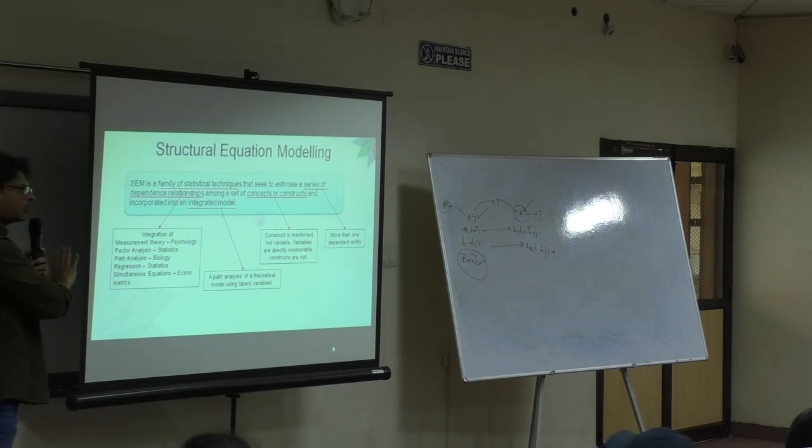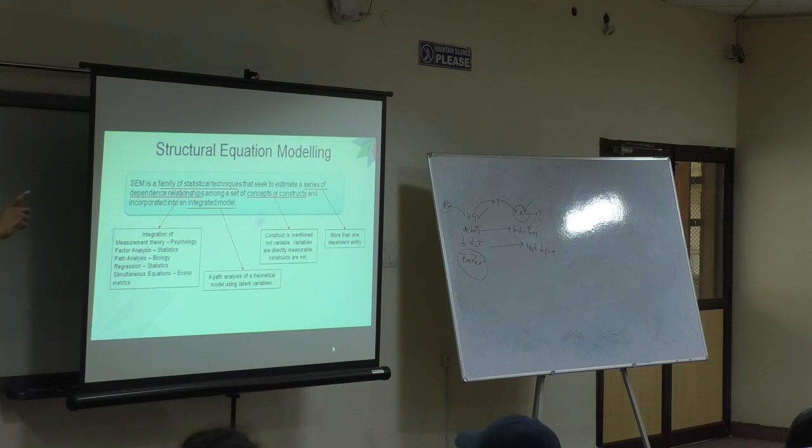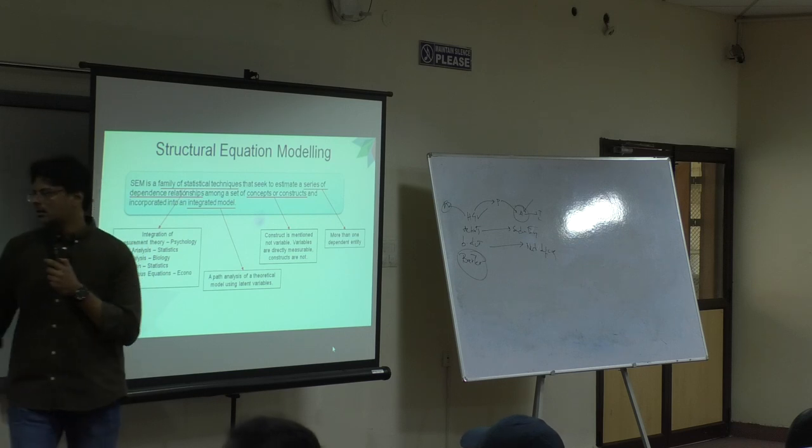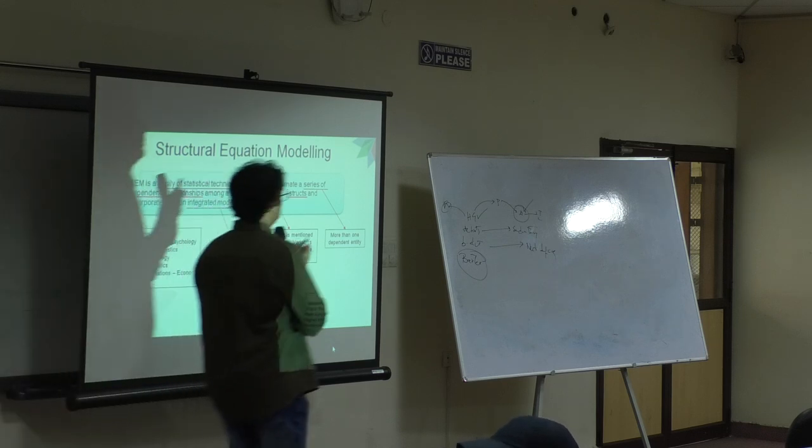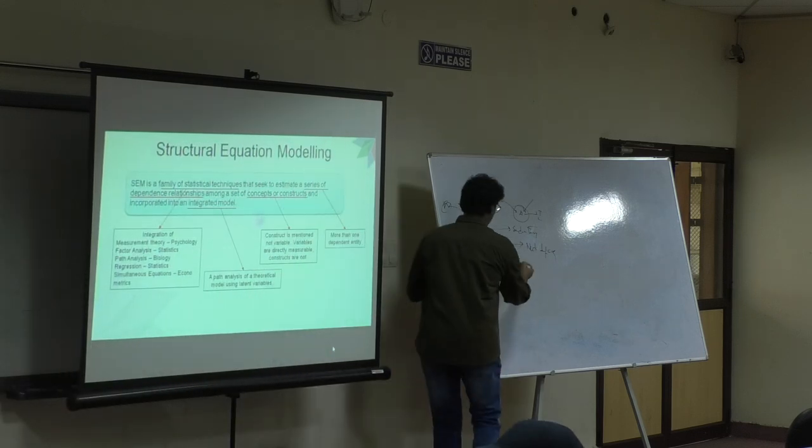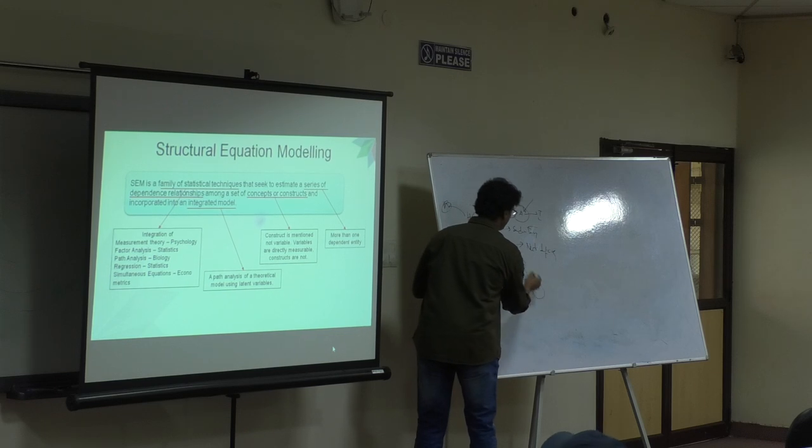In a linear path analysis, there is a definite direction, which means if there is a circular path, you can't use this. Multicollinearity is a problem here. We talked about multicollinearity—if there is a correlation between the independent variables. As long as it is like this, I can do my analysis.